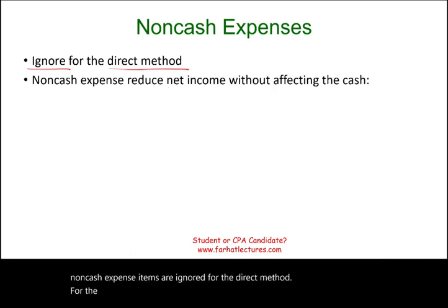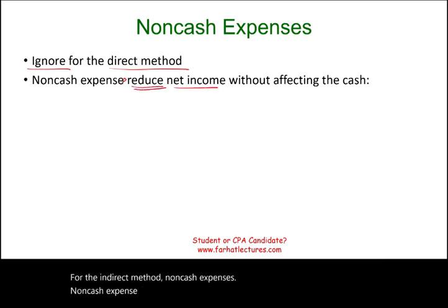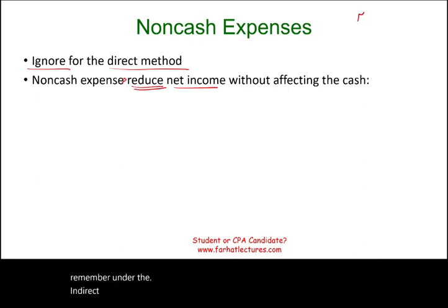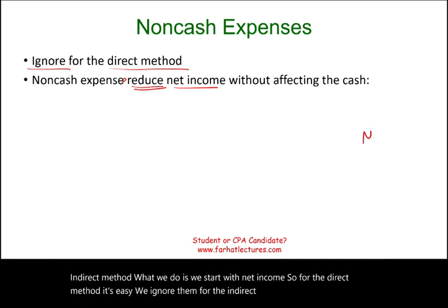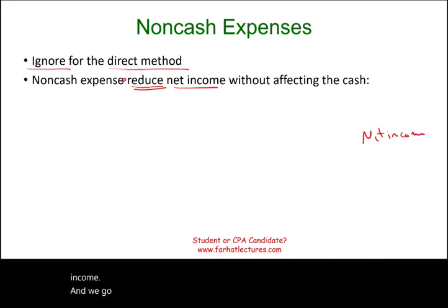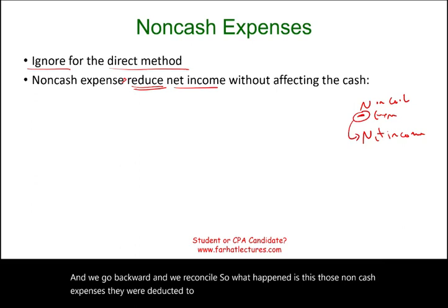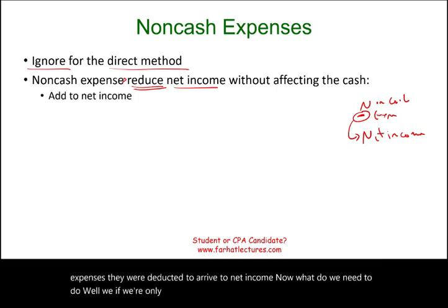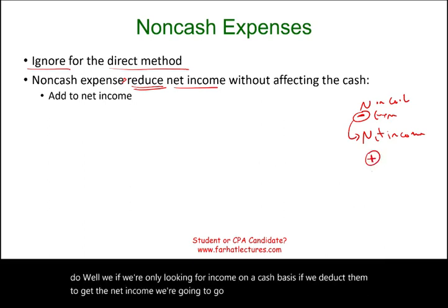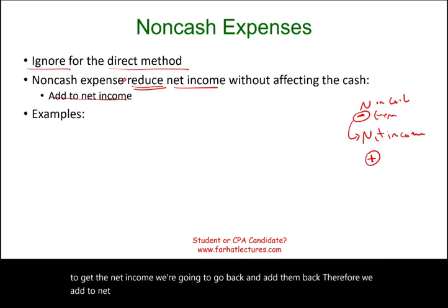For the indirect method, non-cash expenses reduce net income. Under the indirect method, we start with net income and go backward to reconcile. Those non-cash expenses were deducted to arrive at net income. If we're only looking for income on a cash basis and we deducted them to get net income, we go back and add them back. Therefore, we add them to net income.